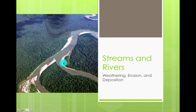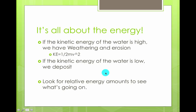This is actually part of the Amazon River. These things right here are formed by deposition. These banks along here and up here are formed by erosion and weathering. We're going to go through how I actually know that. So the first thing you need to know is it's all about the energy. We're going to look at the kinetic energy of the water because that's what determines which process is going on.